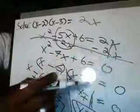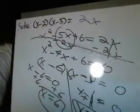Now, don't forget the 2x that you subtracted — we already took care of that. So the answer is x equals 6 and x equals 1. Thank you for watching.